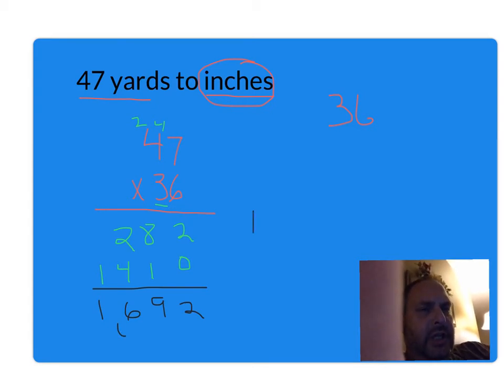So 47 yards equals one thousand six hundred ninety-two inches. Watch this video again as many times as it takes to realize how to convert yards to inches.